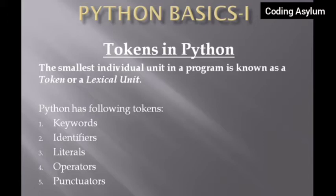First, let's see what types of tokens are available in Python. Python has five tokens: keywords, identifiers, literals, operators, and punctuators. Today in this video we will be dealing with three of them — keywords, identifiers, and punctuators.